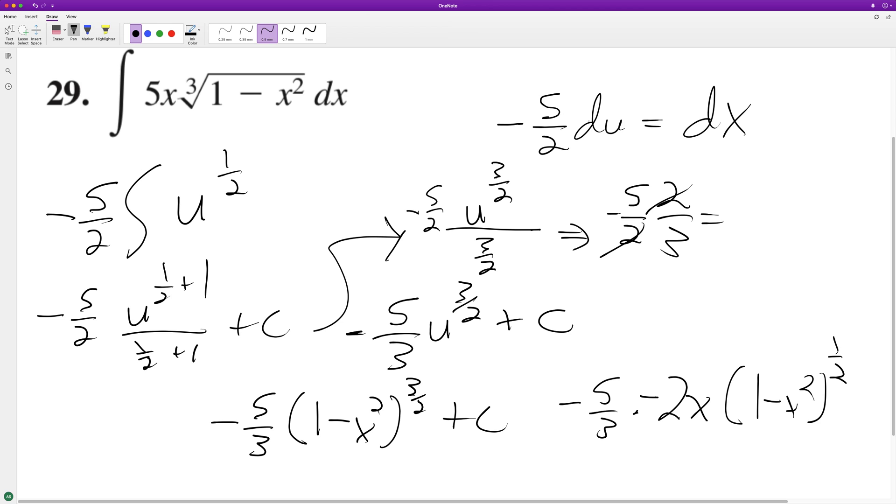Oh, oops, five thirds. So I need to pull out the three halves. So that cancels that out, that cancels that out, and then the negative and negative makes it a positive.